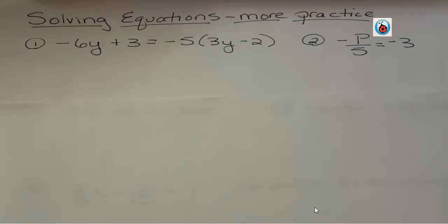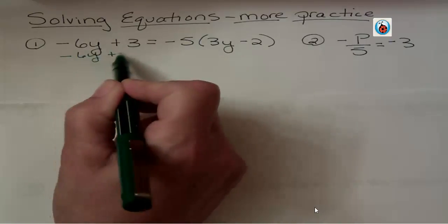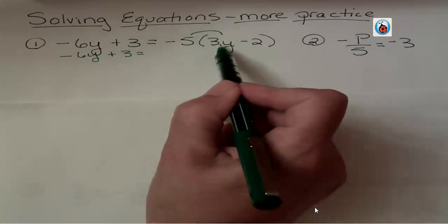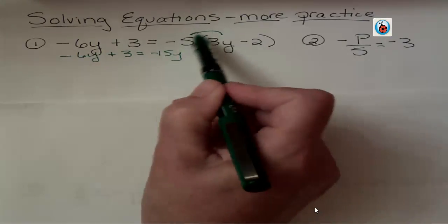In this equation, we have parentheses and variables on both sides, plus constant terms on both sides. It's several steps, but the first thing we want to do is clear the parentheses. On the right side, I'm distributing negative 5 times 3y and negative 5 times negative 2.